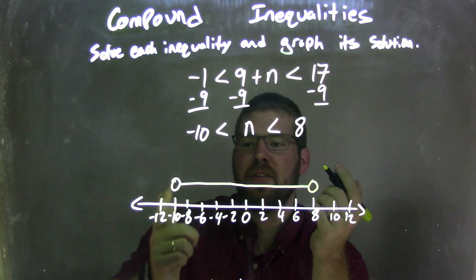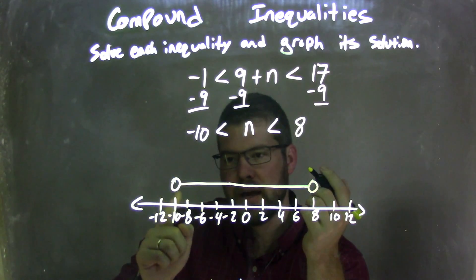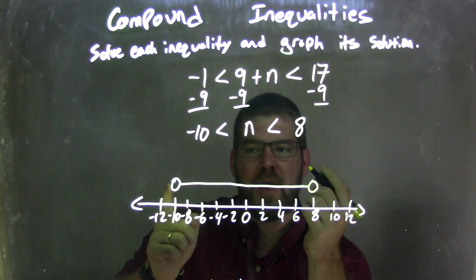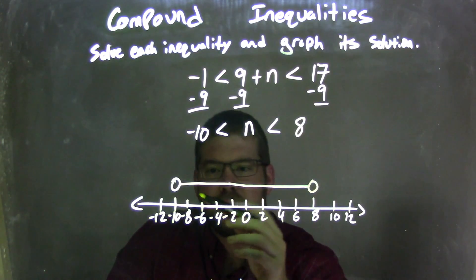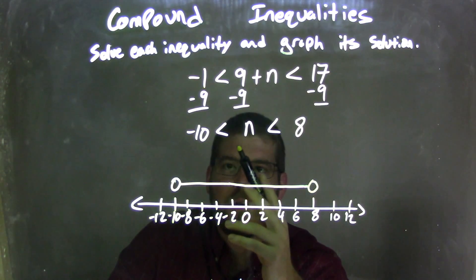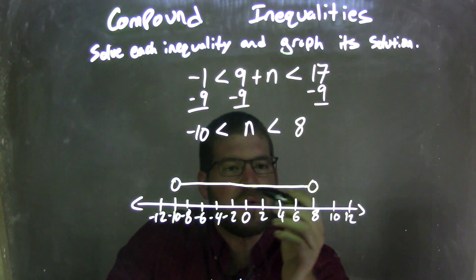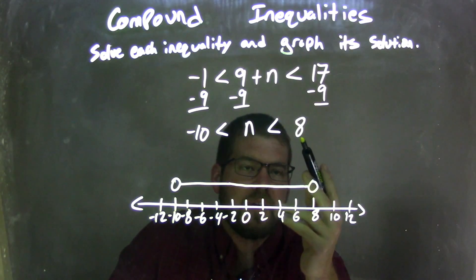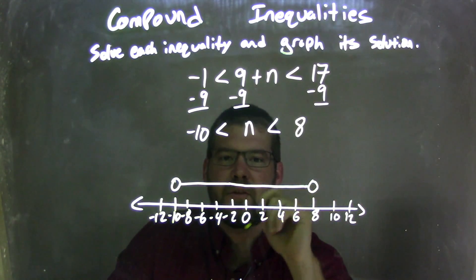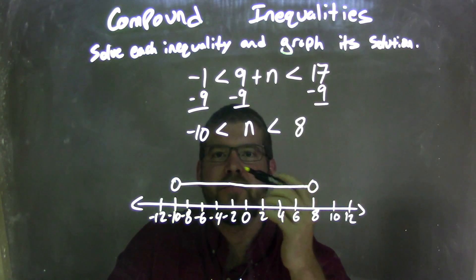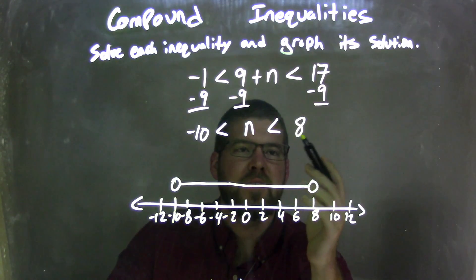Because it says negative 10 is less than n, which is true. Negative 10 is less than n, it's not equal to, so n is all these values. For example, negative 8 is greater than negative 10, and it's also less than 8. So all these values in here are also less than 8 but not equal to 8. And so there we have it. We have our graph that matches our answer: negative 10 is less than n, which is less than 8.